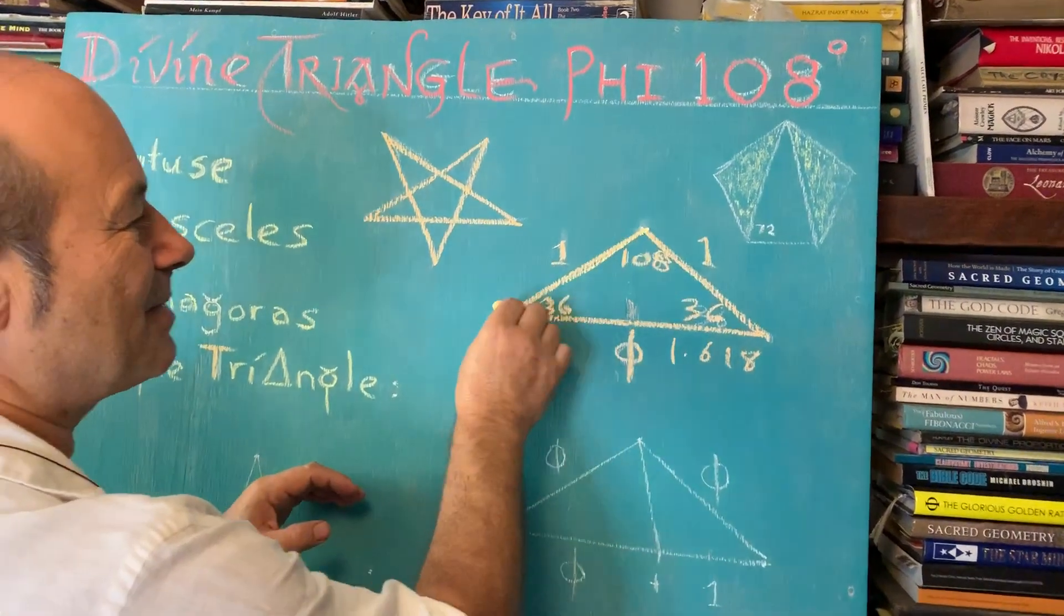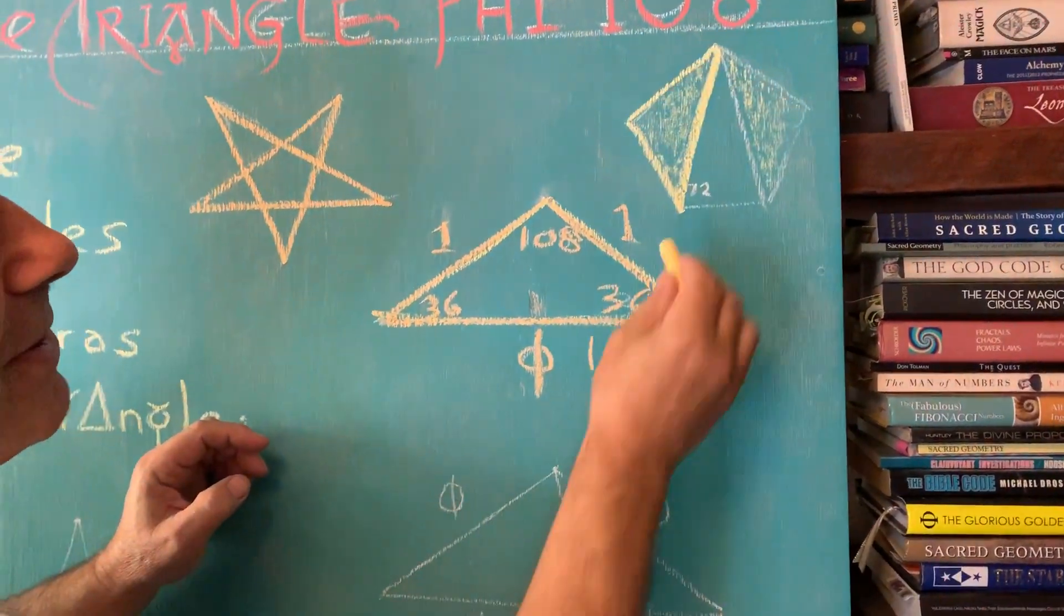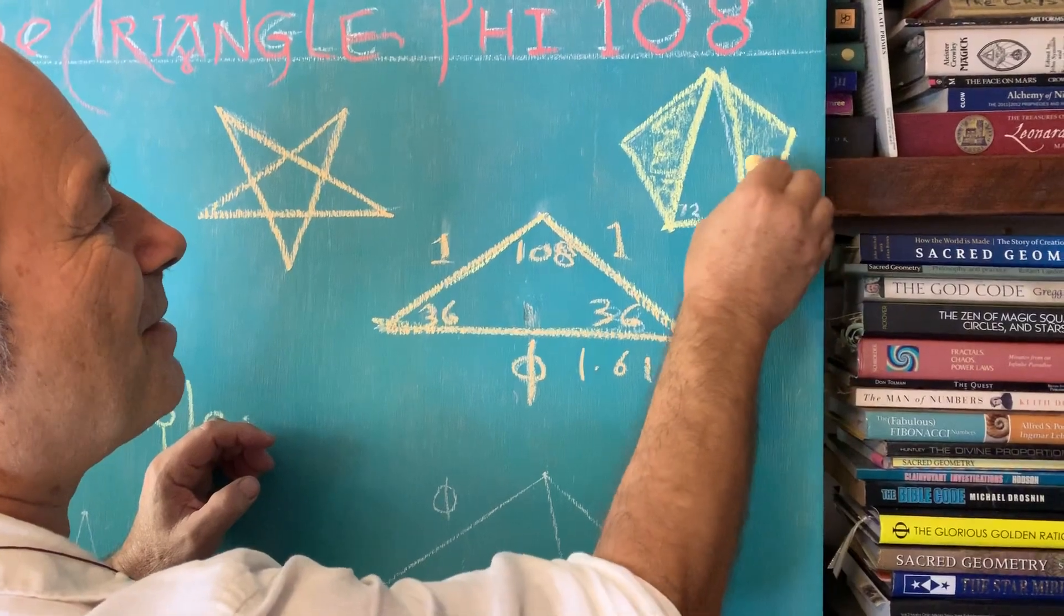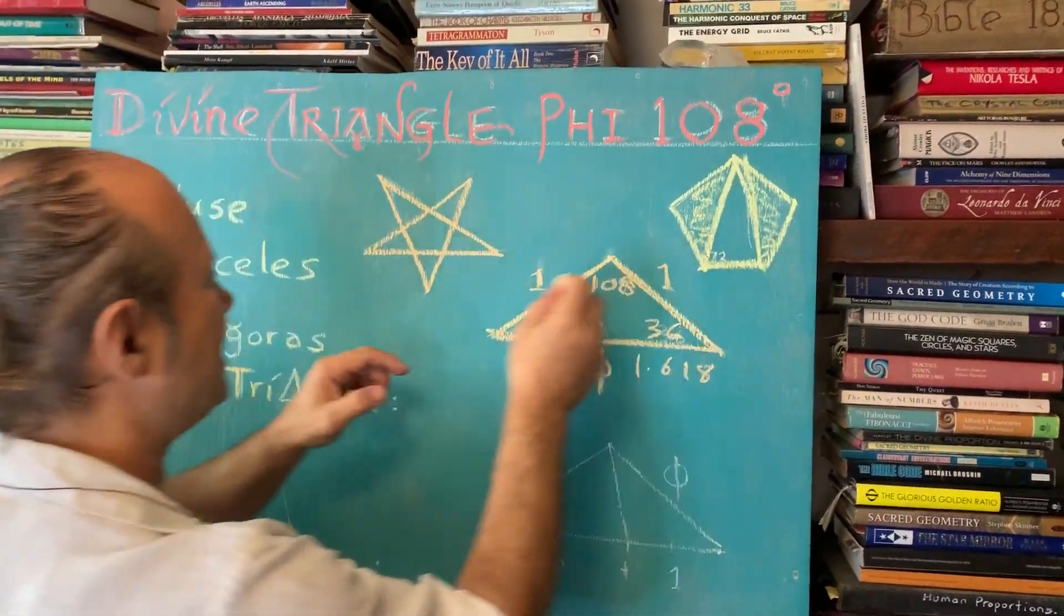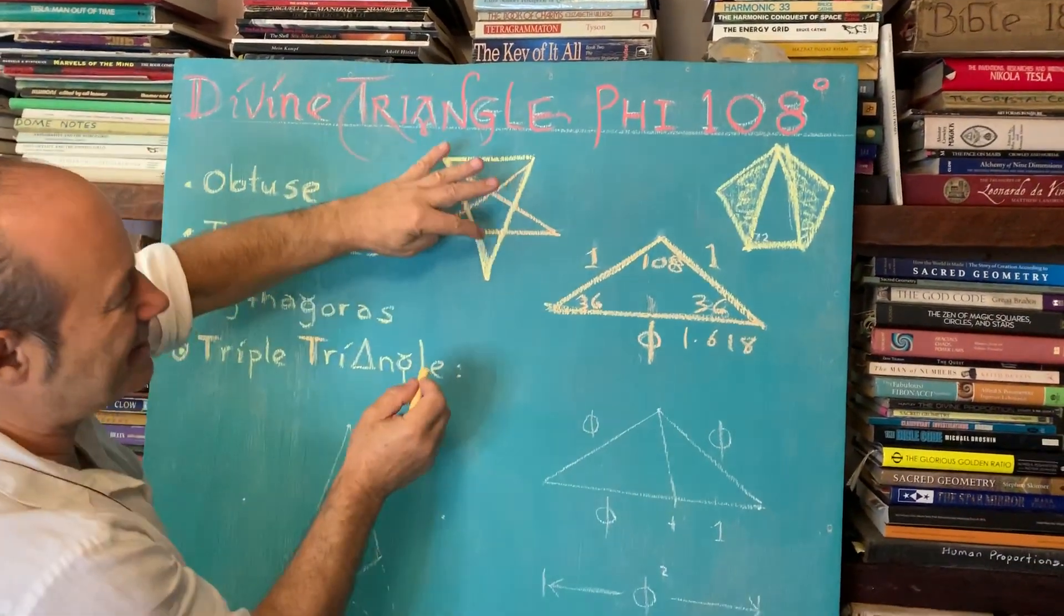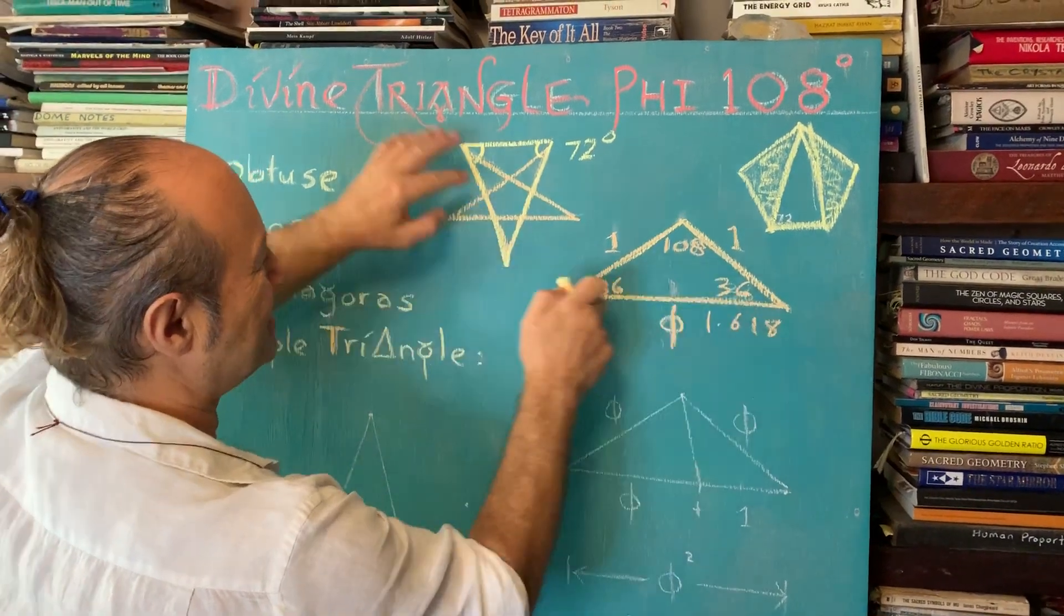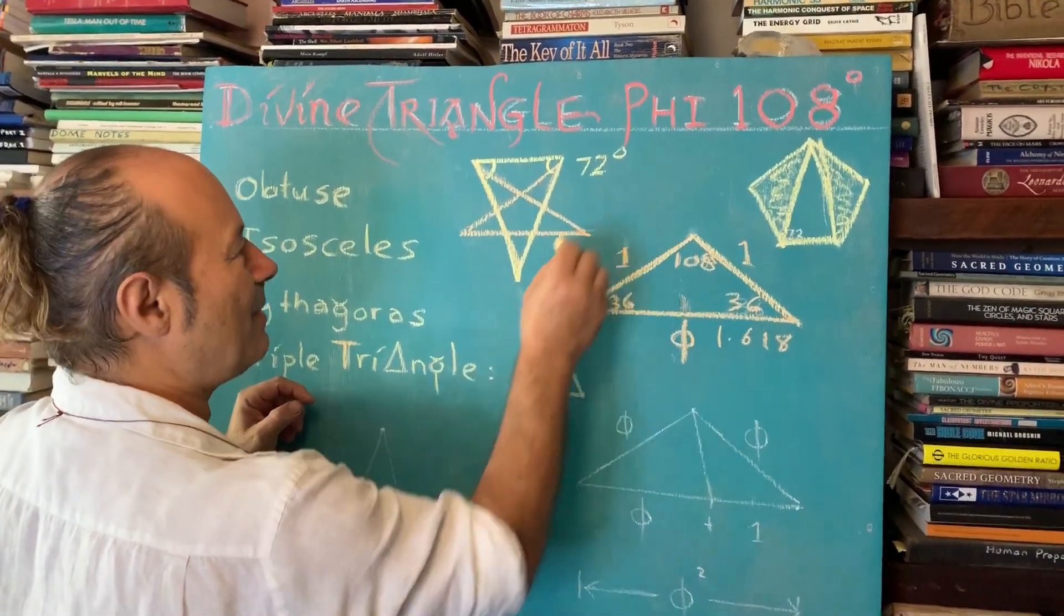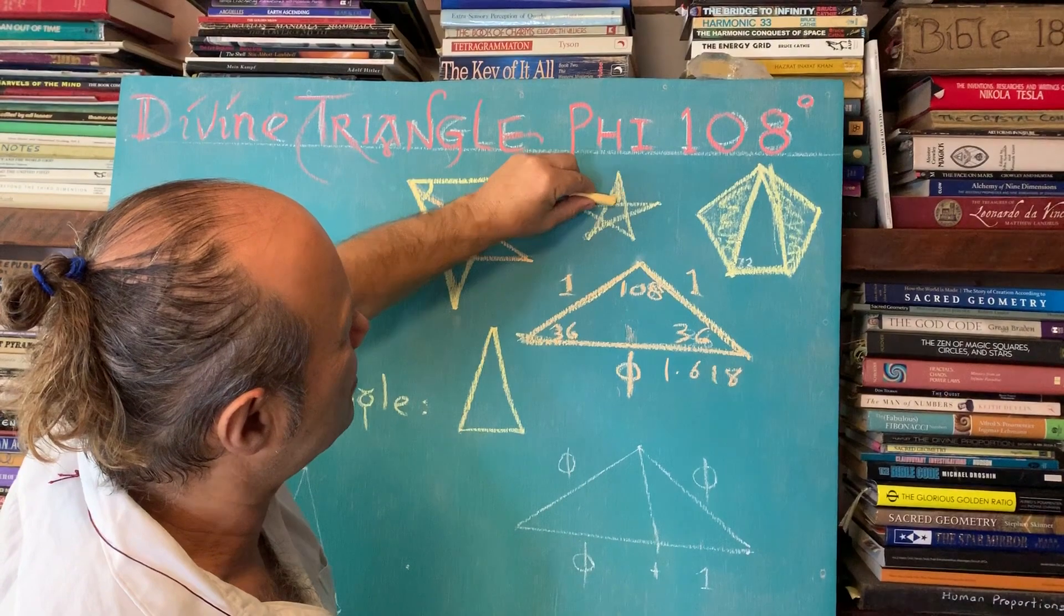So now that shape is interesting because this shape, the divine triangle, happens to fit inside the pentagon. So this shaded bit here is the same triangle. And here it is again. So that's another divine triangle there. Now what's interesting is the space in between. This negative space here is this shape here. So this is also called a golden triangle. But this time, the base angles here are 72 degrees. Whereas here, they're 36 degrees. So that this is called a golden triangle.